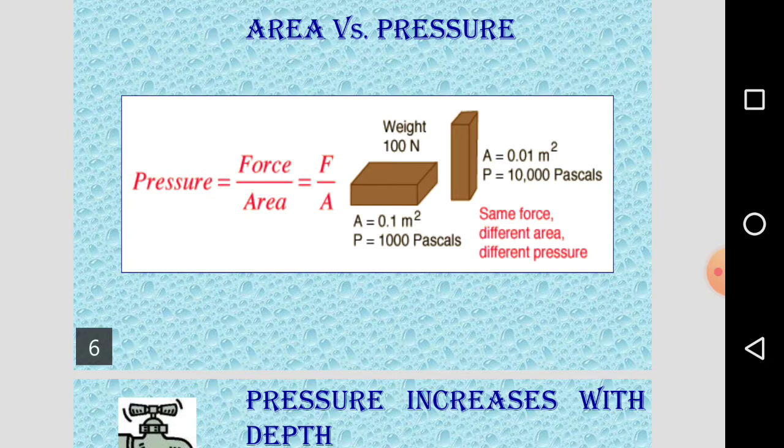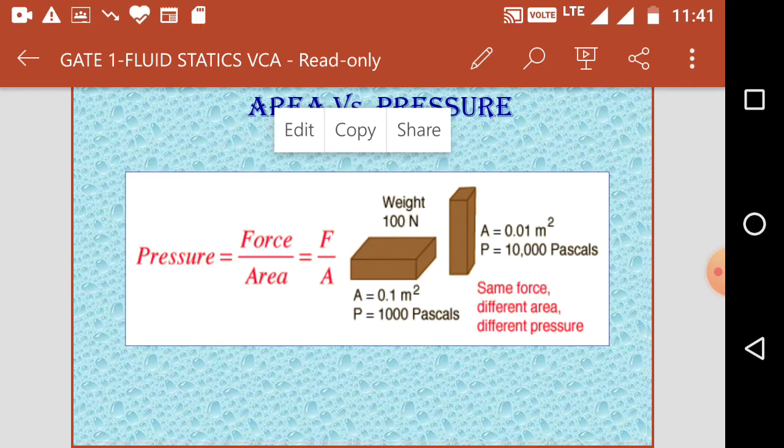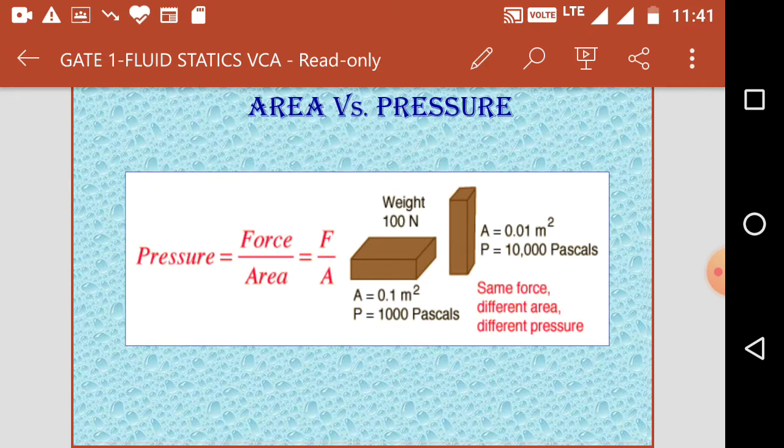For example, consider a specimen. First specimen weight 100 newton, area 0.1 square meter cross sectional area. Pressure is force by area, therefore it is 100 newton divided by 0.1 square meter, which is 1000 pascals. 1000 newton per meter square, and 1 newton per meter square is 1 pascal.